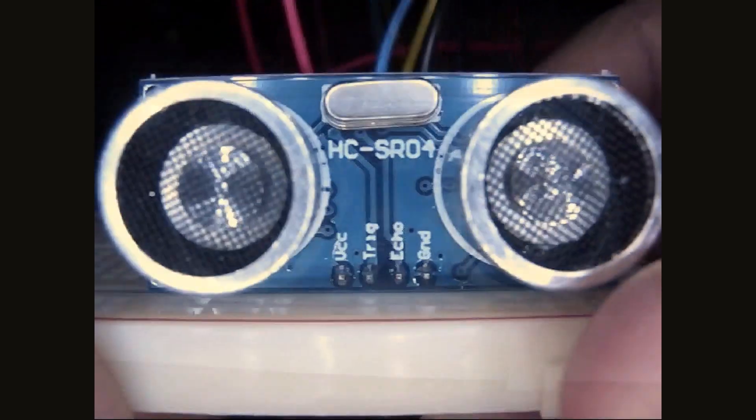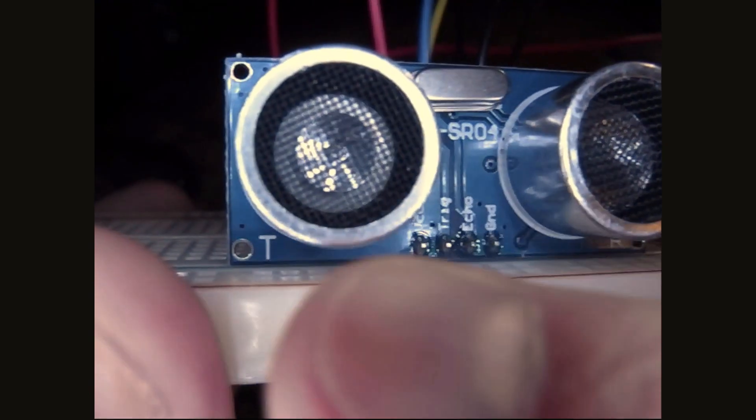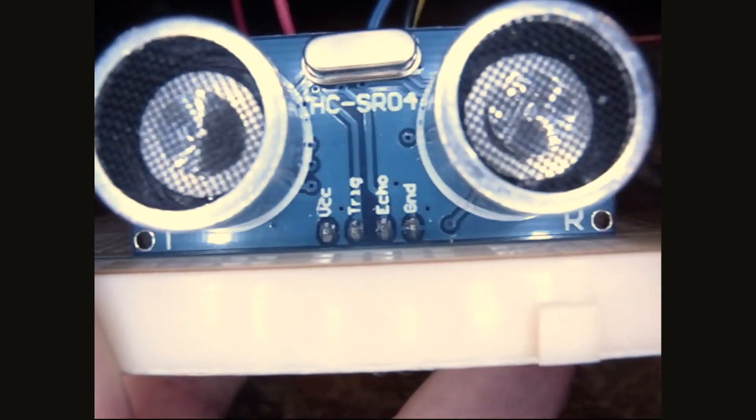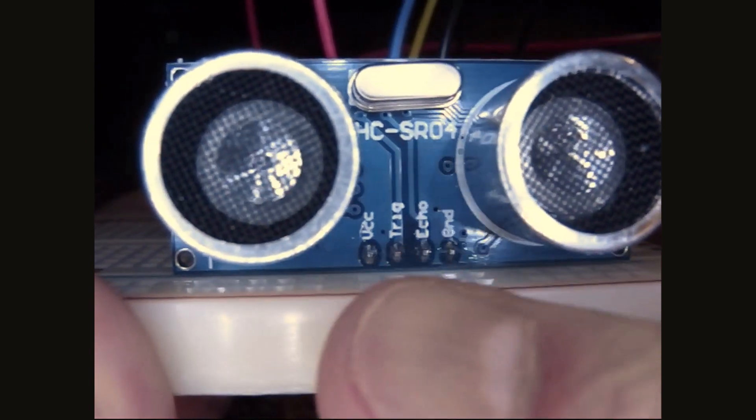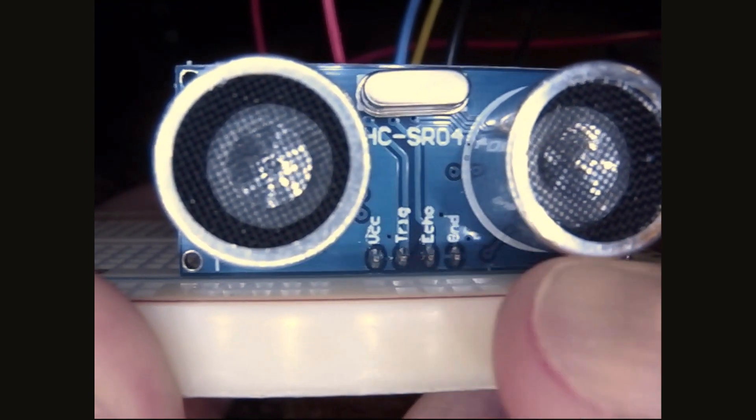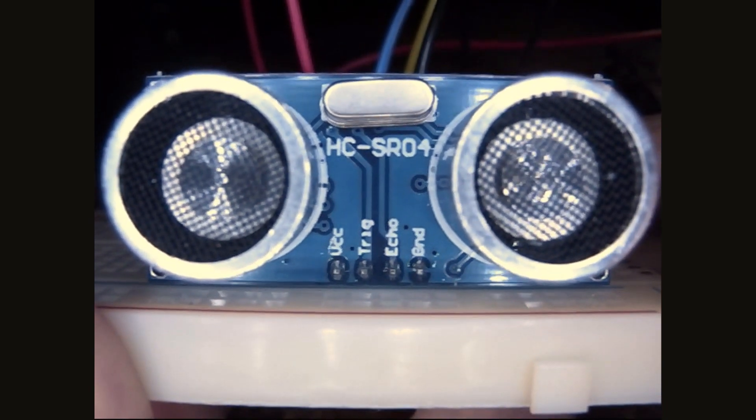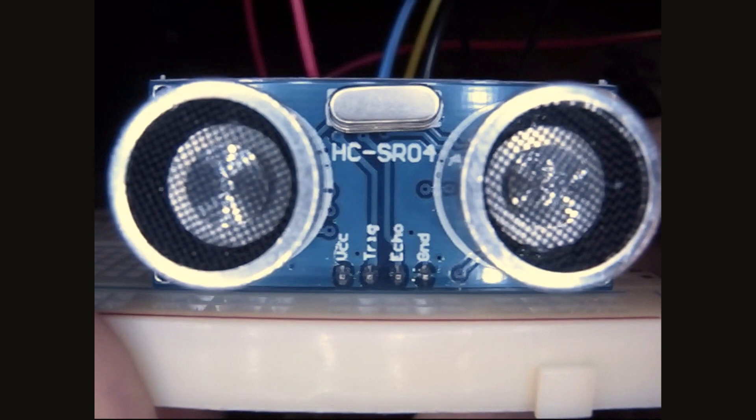Let's take a look around. The first thing to notice is it's got a transmitter T and a receiver, and it's got four pins: VCC, trigger, echo, and ground. It does run on 5 volts, so it's kind of unusual. Most of the Pi stuff runs on 3 volts.